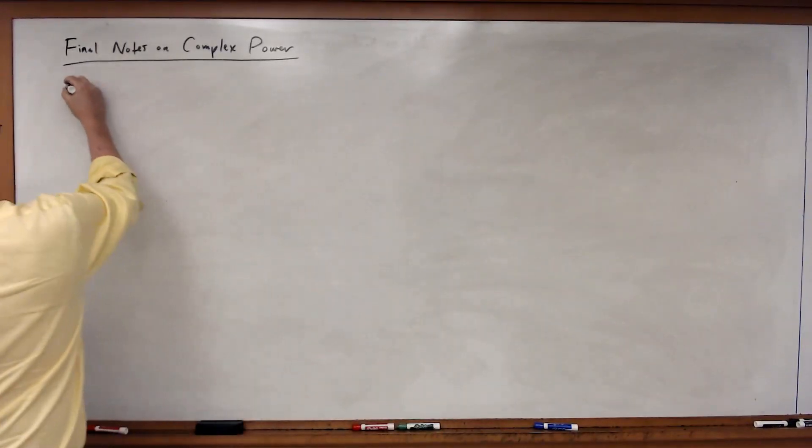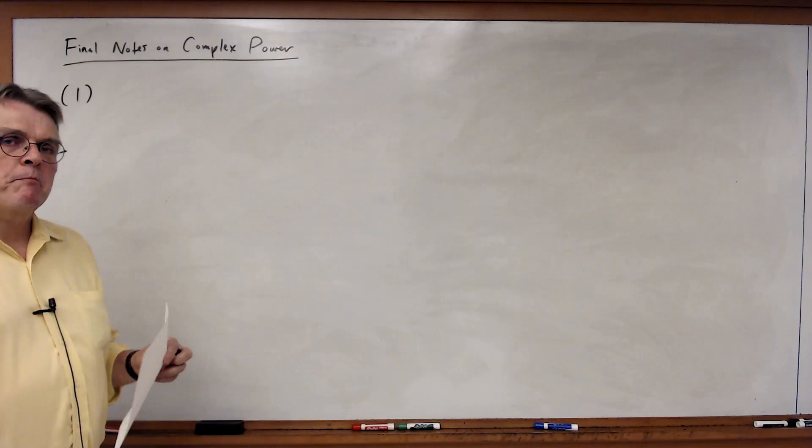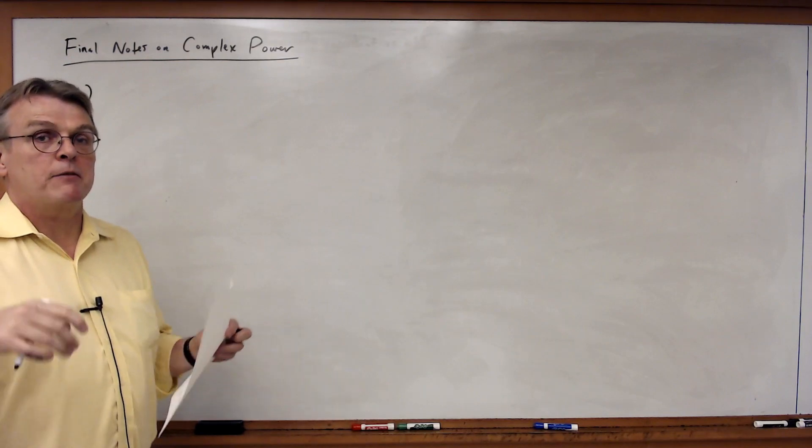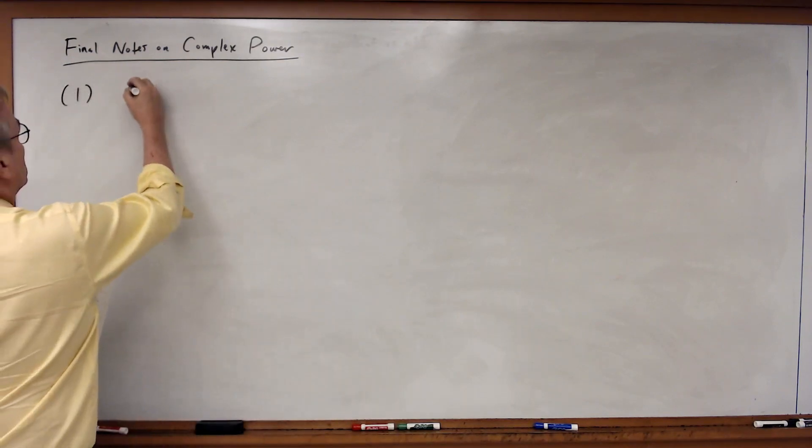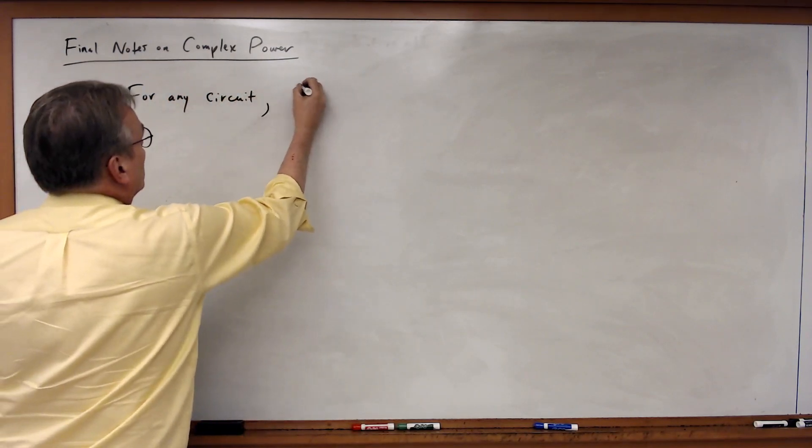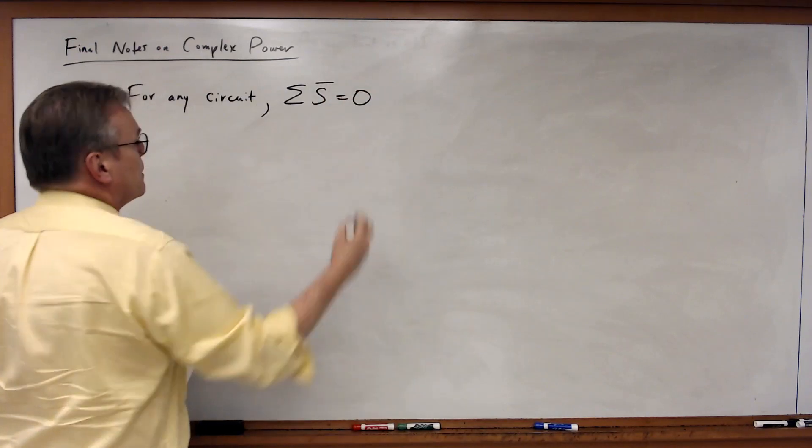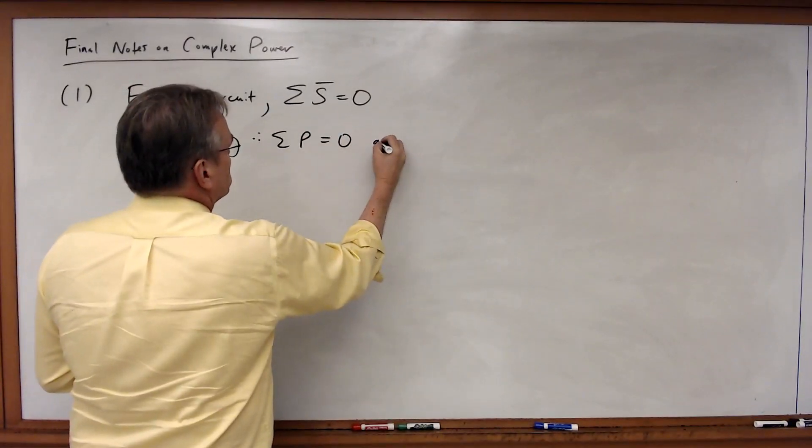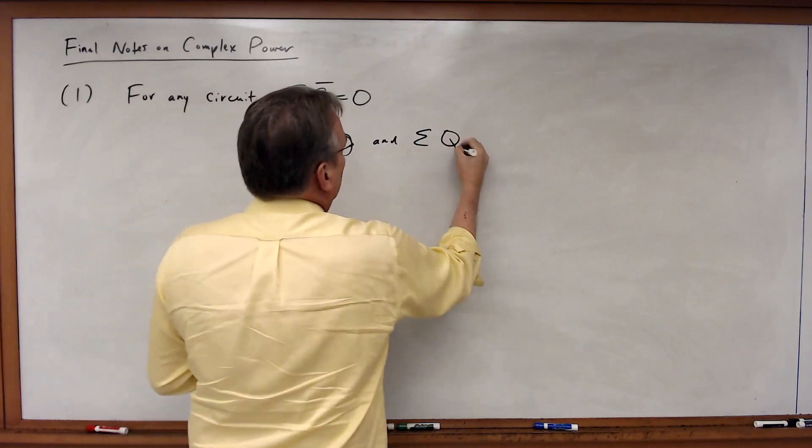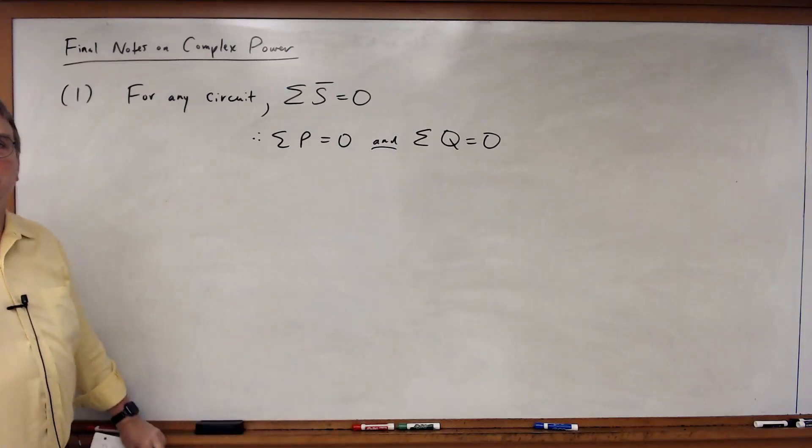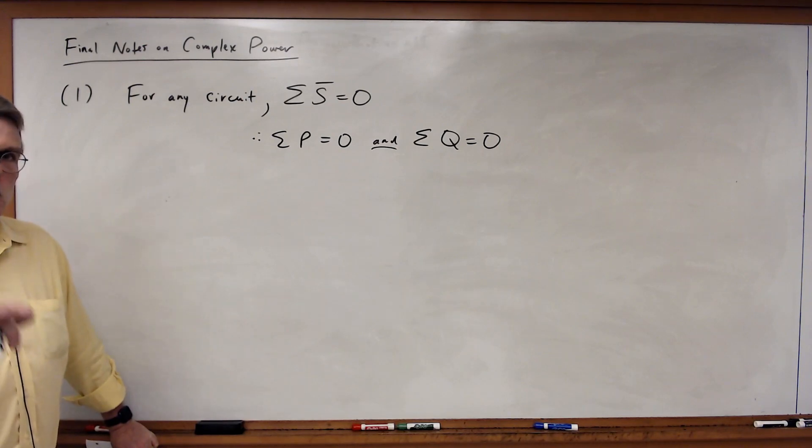First of all, I want to reiterate that conservation of power works with complex power the same way it did with DC power at the beginning of the course. So for any circuit, the sum of all the complex powers must be equal to zero, and therefore the sum of all the real powers must be equal to zero, and the sum of all the reactive powers must be equal to zero as well. So this is always a way to check to make sure your solutions make sense. Complex power should always zero out when you add everything in, sources plus load.